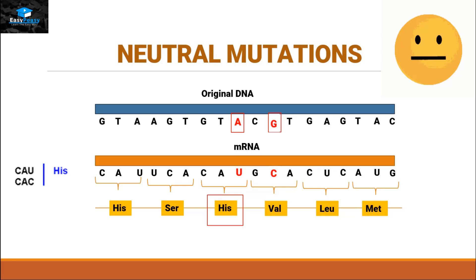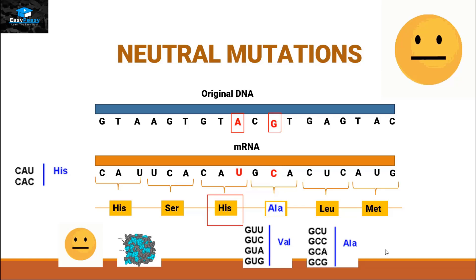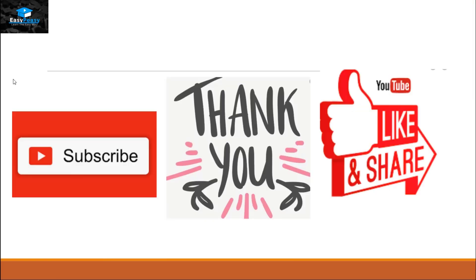Now GCA does not code for valine, because all codes for valine start with GU and the third nucleotide can change from U, C, A, and G. GCA rather codes for alanine, and all the codes for alanine start with GC, with the third nucleotide changing from uracil, cytosine, adenine, and guanine respectively. Both of these amino acids belong to the hydrophobic amino acid category, so the amino acid in the protein is changed but it is not affecting the function of that protein — so it again comes under the category of a neutral mutation. Thank you very much for watching.